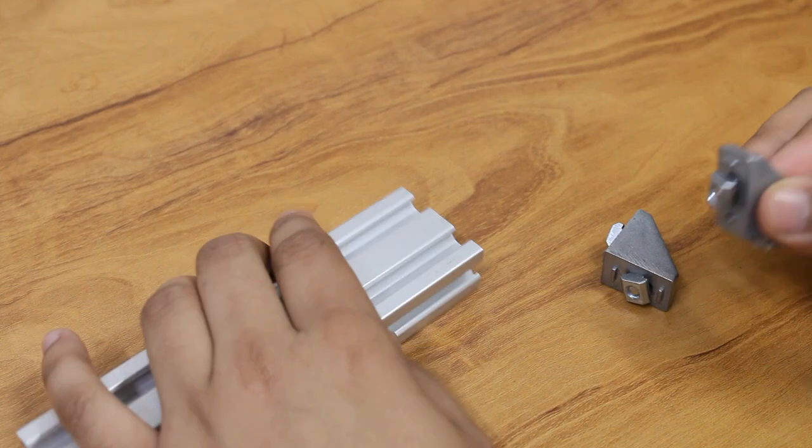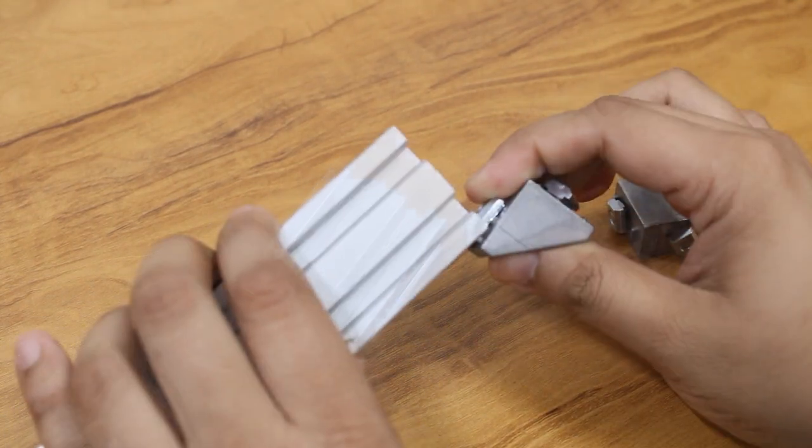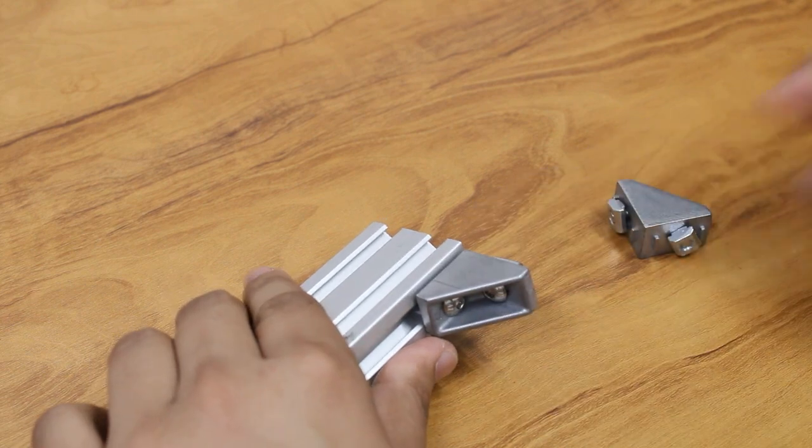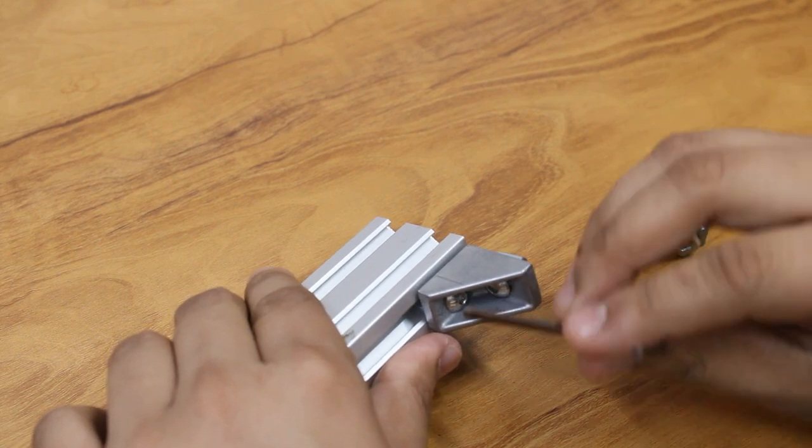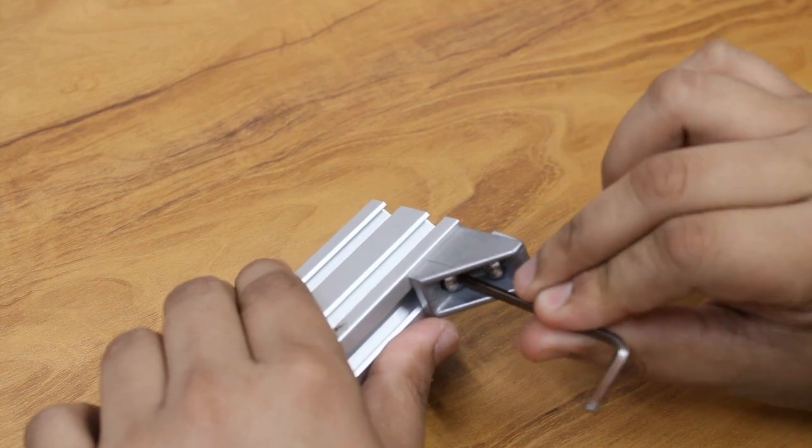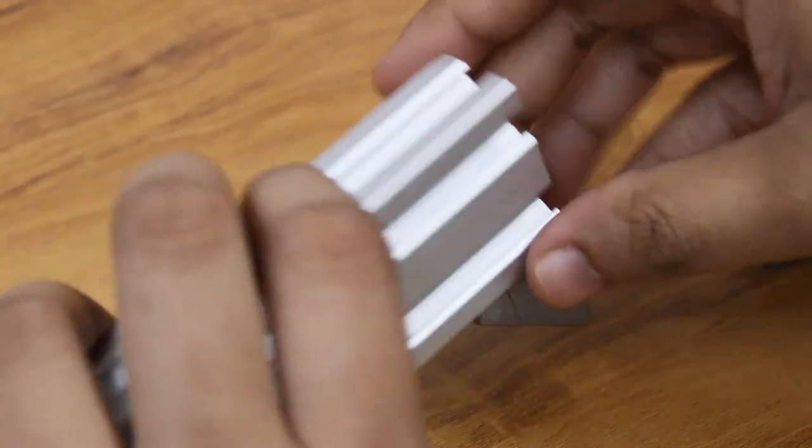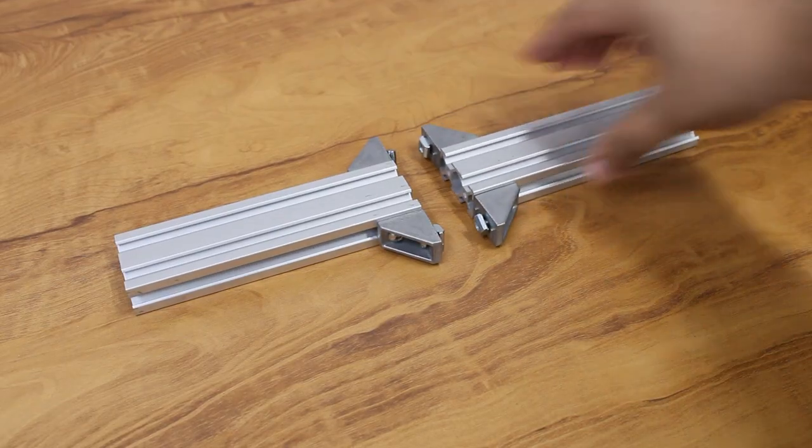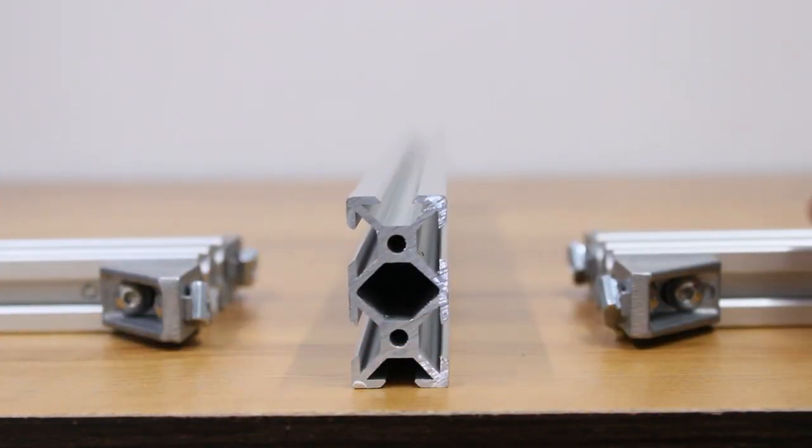Attach the profile at a right angle using the brackets. Do the same for the other side and slide the brackets in the main profile.